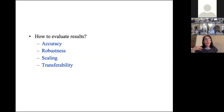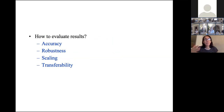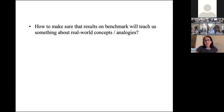How do we evaluate results? We've seen in machine learning that just using accuracy sweeps a lot under the rug and allows things to seem more intelligent than they actually are. We should probably measure performance in terms of robustness to changes in the data, scaling to more complicated situations, and ability to transfer learning to different domains — all of these should be incorporated in our evaluation. And if we have results on a benchmark, how do we figure out what that teaches us about real-world concepts or analogies?